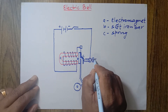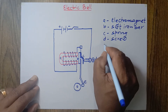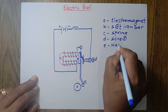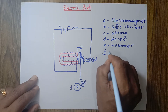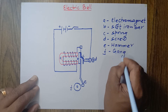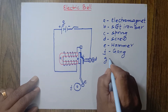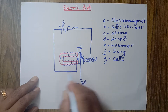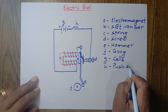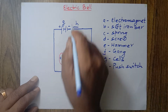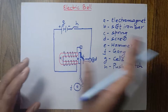C is the spring, D is the screw, E is the hammer, F is the gong, G is the cells, and H is the push switch. The push switch means when we push it the connection is made, and when we release our hand the connection is cut off.